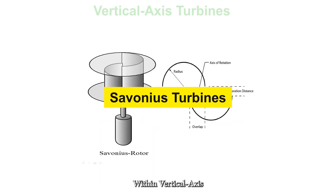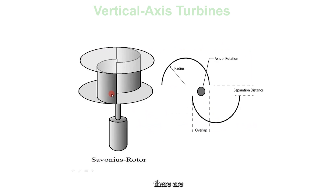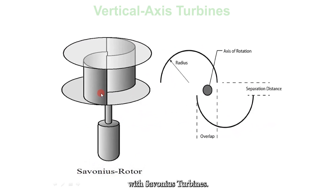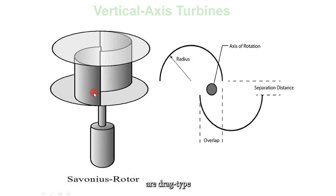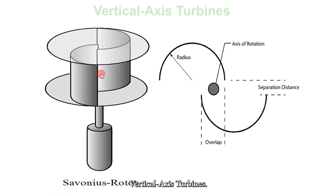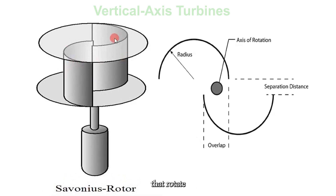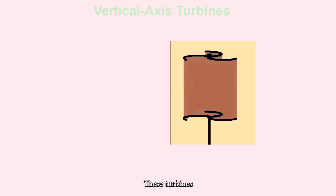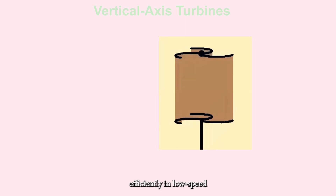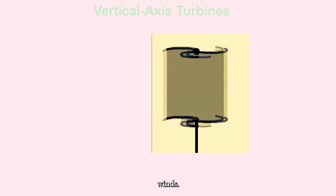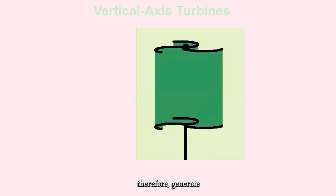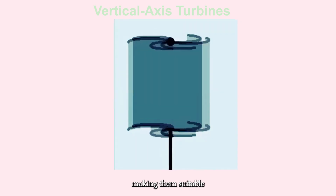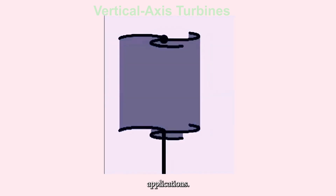Within Vertical Axis Turbines, there are several subtypes. Savonius Turbines are drag-type vertical axis turbines. They consist of curved blades that rotate as the wind strikes them from different angles. These turbines are self-starting and can work efficiently in low-speed winds. However, they have low RPM and therefore generate limited electrical energy, making them suitable mainly for small-scale applications.